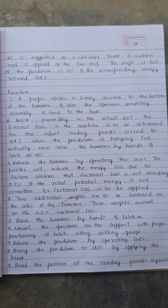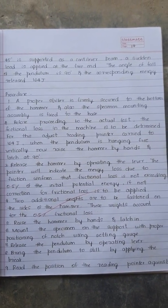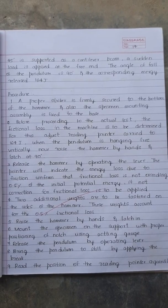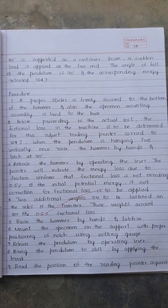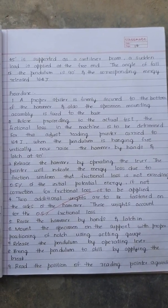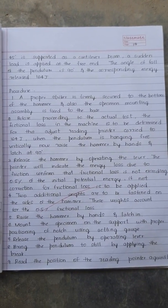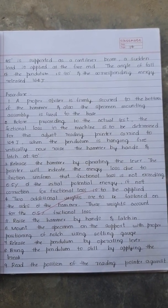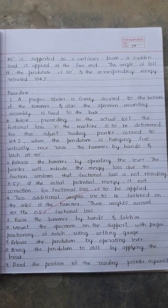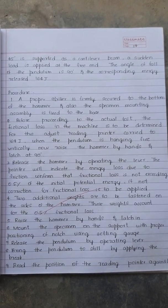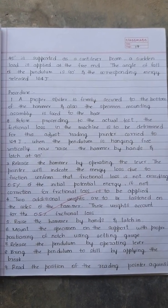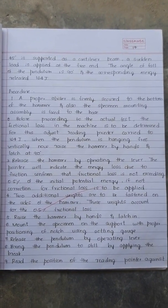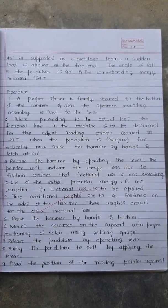Procedure: First, a proper striker is firmly secured to the bottom of the hammer and the specimen mounting assembly is fixed to the base. Second, before proceeding to the actual test, the friction loss in the machine is to be determined. Adjust the reading and correct it to 164 joules when the pendulum is hanging free vertically.